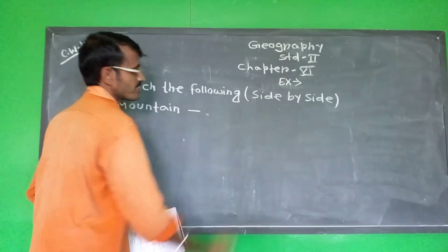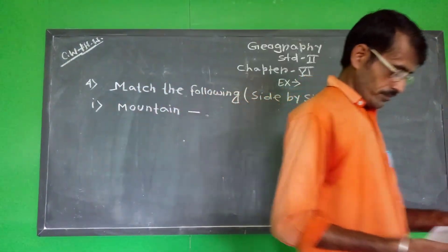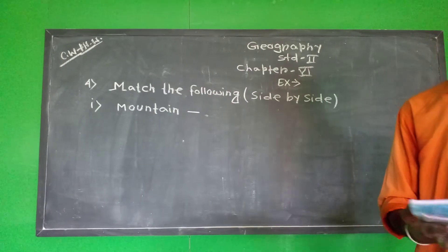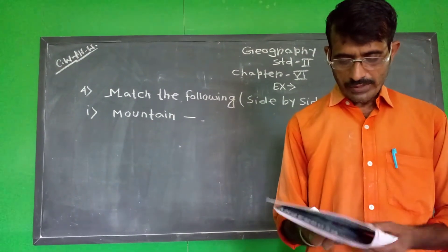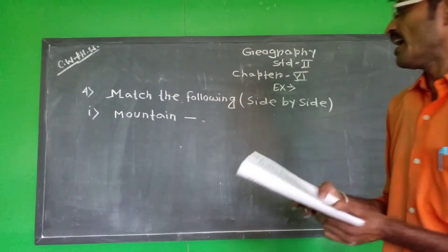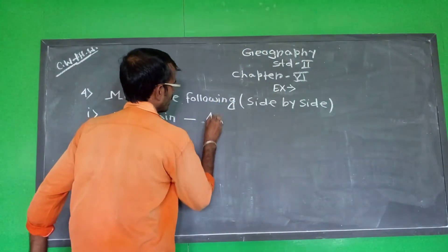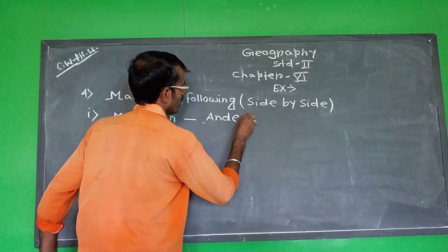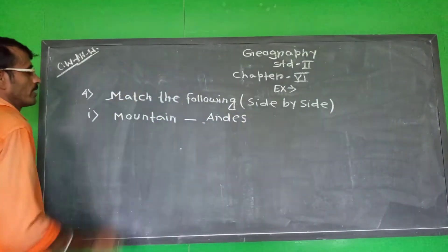And right side — who will write the right answer? Mountain will be B. And this is A, and this is the boundary. Okay.